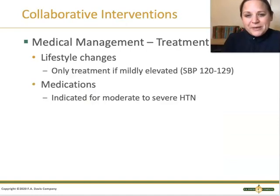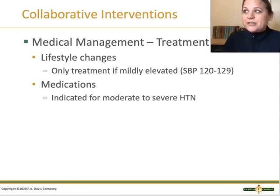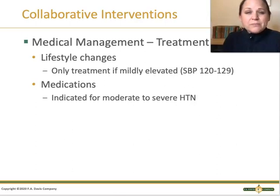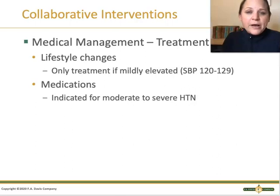The first treatment approach is lifestyle modifications — diet and exercise, eating a low-salt diet with lots of fruits and vegetables, and staying active. If someone is just mildly elevated with a systolic of 120 to 129, that may be enough, and that's typically where we start. But if someone has stage one, stage two, or higher blood pressure, we typically start them on medications as well.